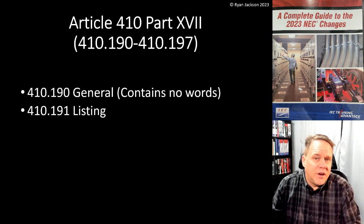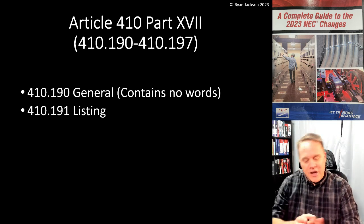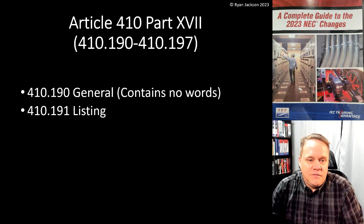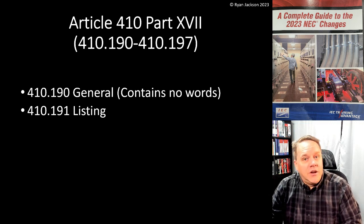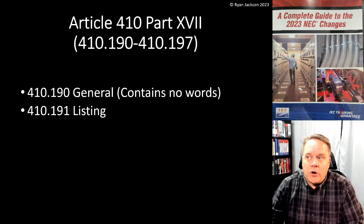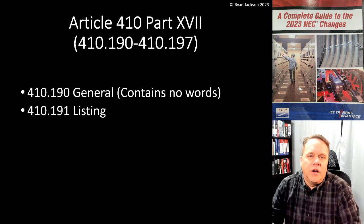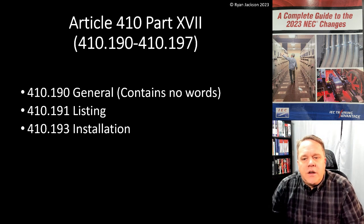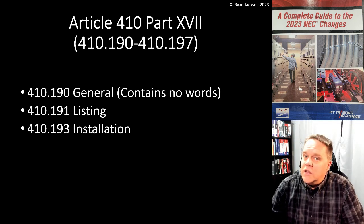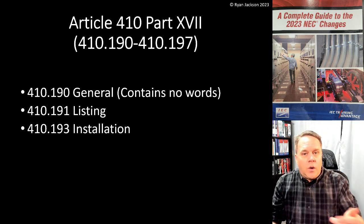Section 410.190 is labeled 'General' but literally has no words in it. Section 410.191 on listing just says germicidal irradiation luminaires have to be listed — which is already covered by 410.6. Section 410.193 basically just says to follow installation instructions, which is already required by 110.3(B) for listed products.